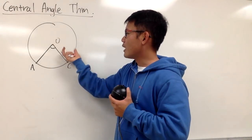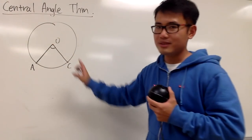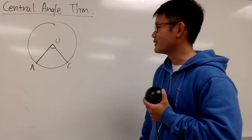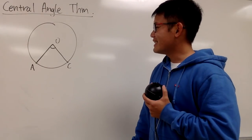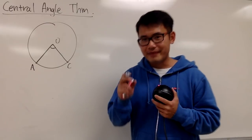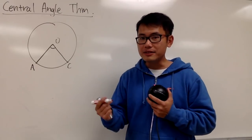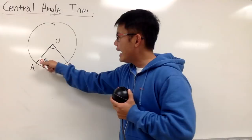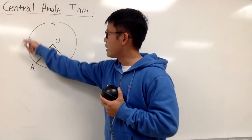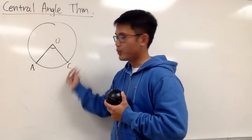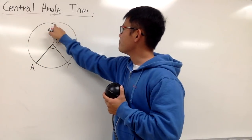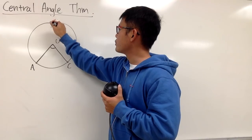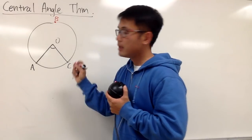Of course, there is also the outer piece, but the smaller one is the usual one we refer to. Now we are going to pick another point on the circle, but not on this arc — anywhere from here to here. For my first picture, let me put down this point right here. I will call this point B.